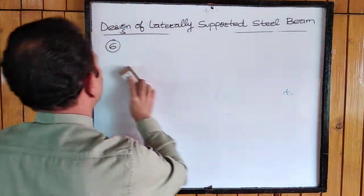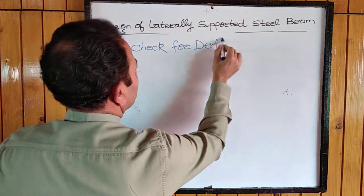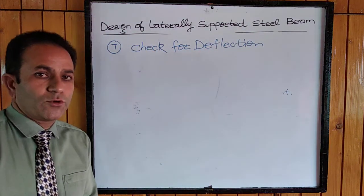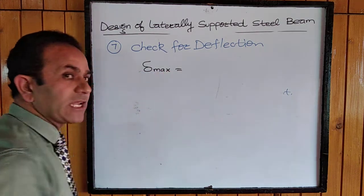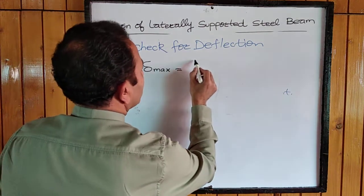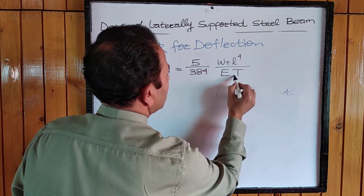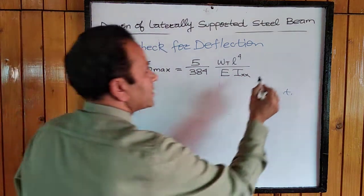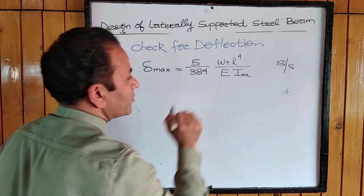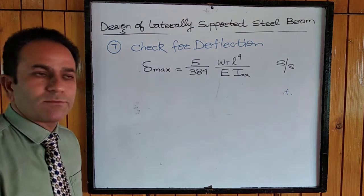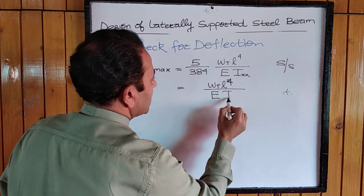After shear, the next parameter to be checked is deflection. The maximum deflection in a simply supported beam due to loads is delta max equals 5/384 times W times l to the power 4, divided by E times Ixx, where W is total load, E is the modulus of elasticity, and Ixx is the moment of inertia — obtained from the steel table for the selected section.